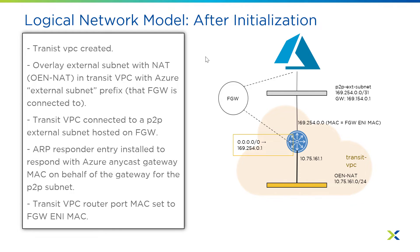Here we have a logical representation of our transit VPC. It's the top layer of our VPC model where the user VPCs would follow underneath. The transit VPC is created after Prism Central is deployed and we start to set up flow virtual networking. We have an overlay external subnet which is also created that will use the point-to-point network that is created automatically as well. The point-to-point network could really be any IP scheme — it's not going to be seen on the wire. The traffic coming from the internal interface of the Flow Gateway VM will redirect traffic to the external side. The external side has a native Azure MAC.